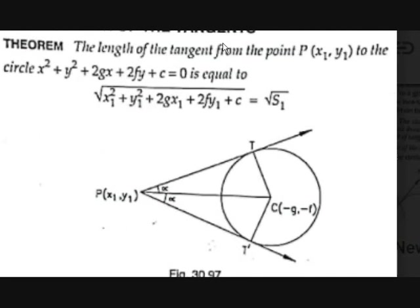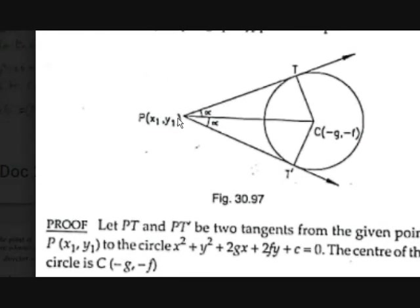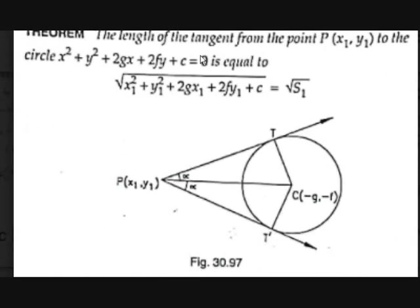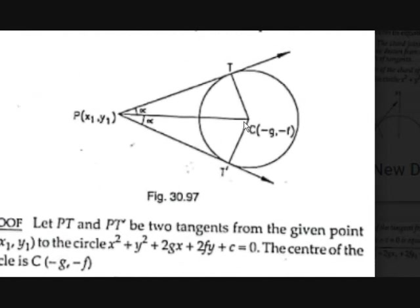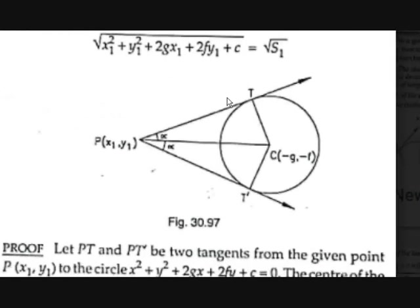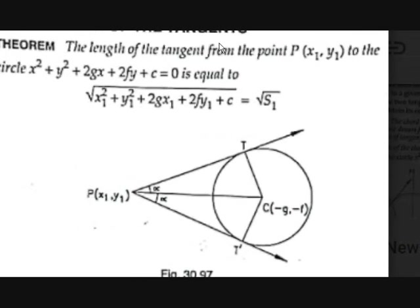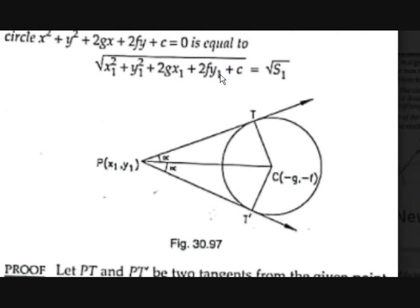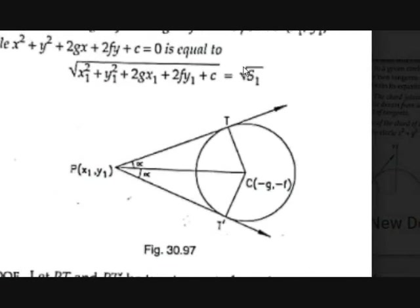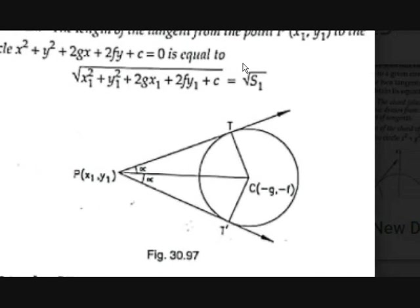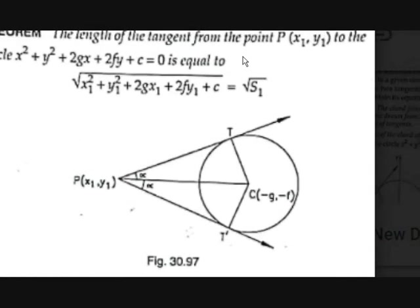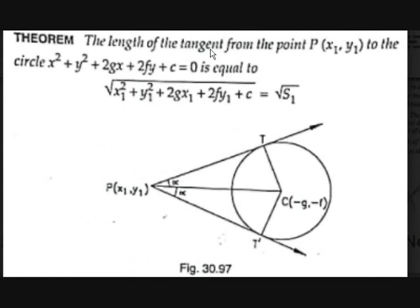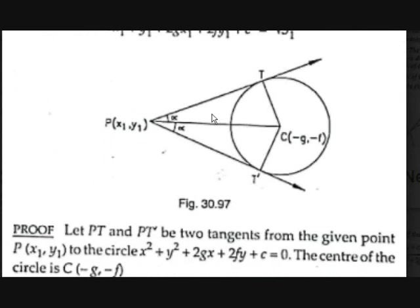The theorem is: the length of the tangent from point P(x1, y1) to the circle x² + y² + 2gx + 2fy + c = 0 is equal to √(x1² + y1² + 2gx1 + 2fy1 + c), which equals √S1, where S is the equation of the circle and S1 means the value obtained by substituting x1 and y1 into the equation of the circle.